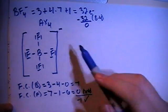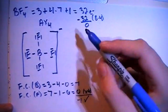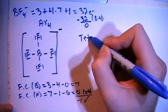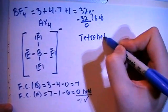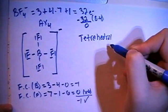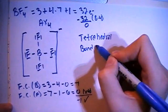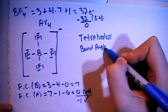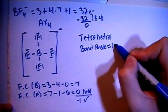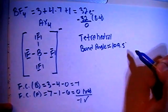Now in terms of shape, when you have the AX4 type structure, that shape is going to be called tetrahedral. And when you have a tetrahedral shape, the bond angles are approximately equal to 109.5 degrees.